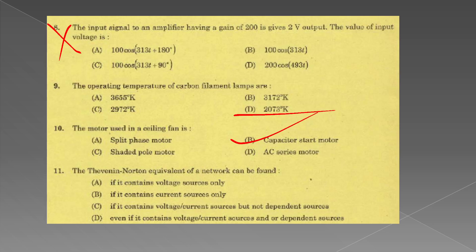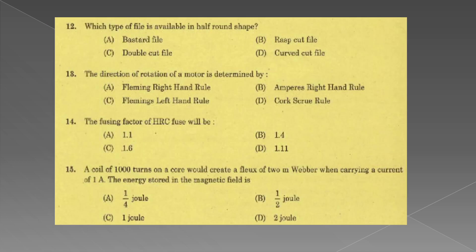The Thevenin Norton equivalent of a network can be found if it contains voltage or current sources and or dependent sources. Option D. Which type of file is available in half round shape? Rasp cut file.